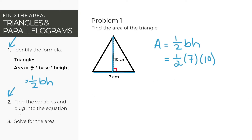For a third and final step, let's solve the equation. We have that the area of the triangle is equal to 1 half times the base, which is 7 cm, times the height, which is 10 cm, and we'll get 35 cm squared for the area of our triangle. And that's our answer.